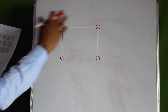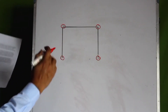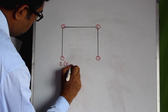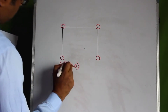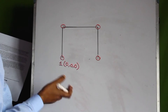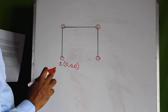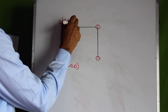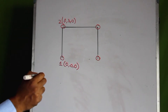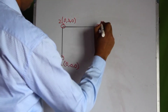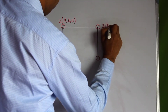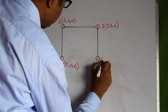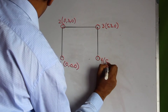Just as a reminder, for this goal post frame we had four nodes. Node 1 had coordinates of 0, 0, 0 — remember that the units of these coordinates are in meters. Node 2 had coordinates of 0, 3, 0. Node 3 had coordinates of 5, 3, 0, and node 4 had coordinates of 5, 0, 0.